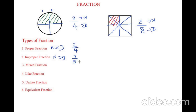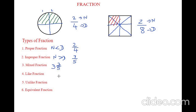Now let's see what is a mixed fraction. A mixed fraction is nothing but any fraction written in the form of 3 and 3 by 5. We have a whole number here and we have a fraction here. So this is called a mixed fraction. I will explain each type of fraction in detail in the coming videos — I am just giving a gist of all the types of fractions here.